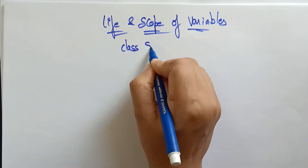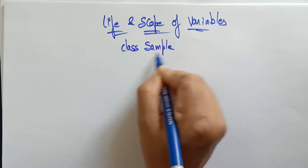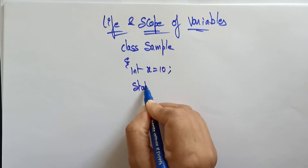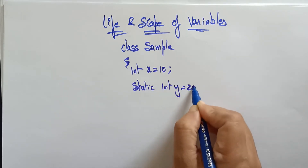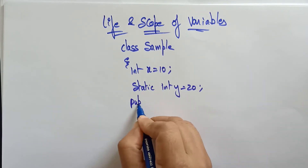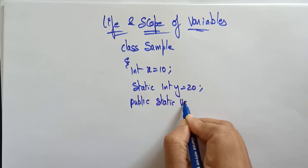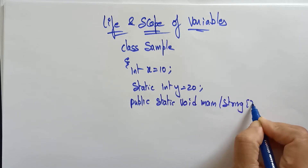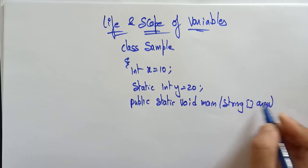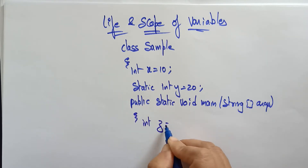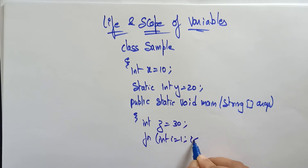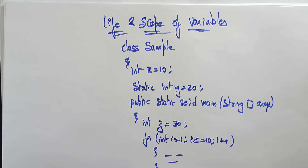Let's take a simple program. Class Sample — int x is equal to 10, static int y is equal to 20, public static void main(String[] args). So int z is equal to 30. For int i is equal to 1, i less than or equal to 10, i plus plus — some loop condition with some statements.